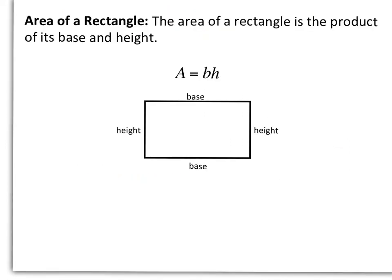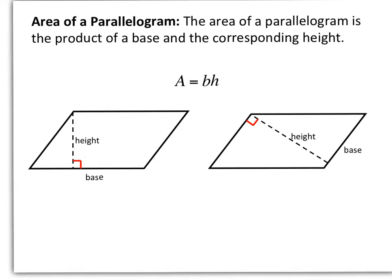The area of a rectangle is the product of its base and height. Remember, a rectangle has two bases and two heights, and opposite sides are congruent. The area of a parallelogram is the product of a base and the corresponding height, where height is the altitude — the perpendicular segment between the two bases.